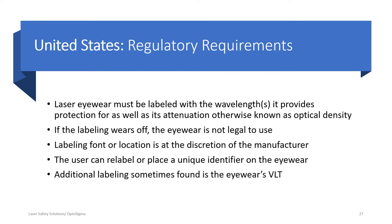Labeling font and location are at the manufacturer's discretion. If labeling wears off, you can relabel it as the user — without a doubt. Some people put unique identifiers on their eyewear, which we'll discuss. The only other labeling you sometimes find on eyewear is the percentage of VLT.